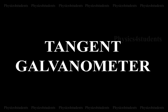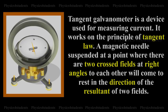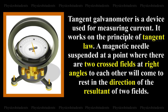Tangent Galvanometer. Tangent galvanometer is a device used for measuring current. It works on the principle of tangent law. A magnetic needle is suspended at a point where there are two crossed fields at right angles to each other will come to rest in the direction of the resultant of the two fields.